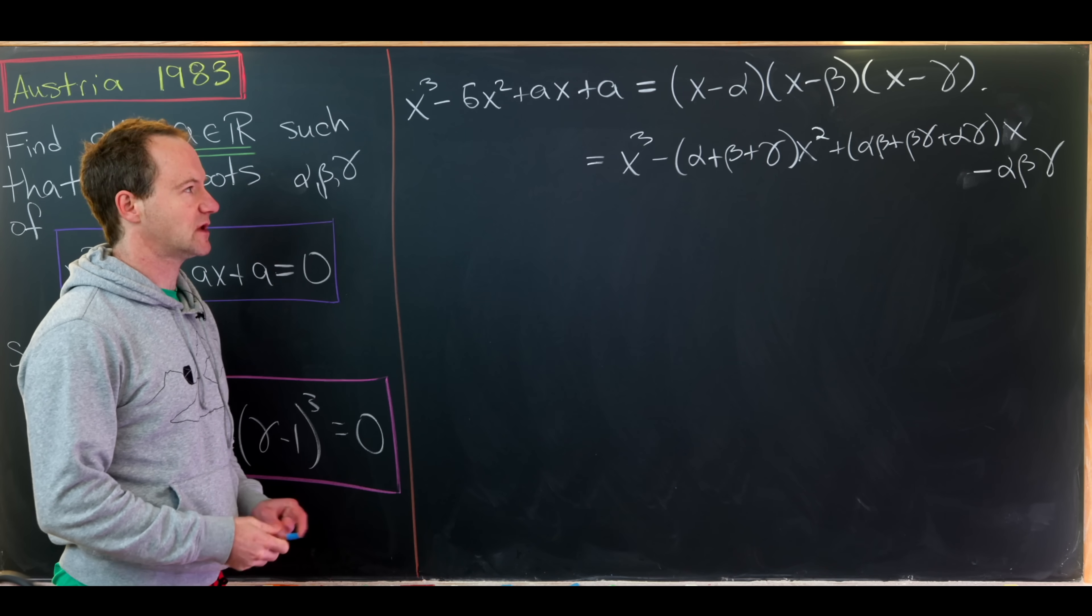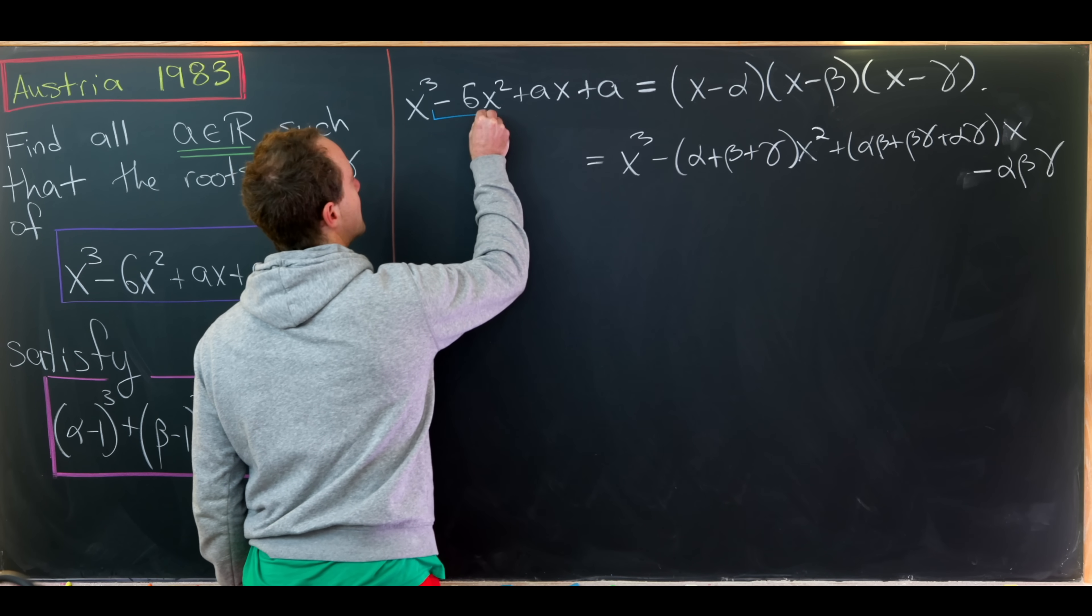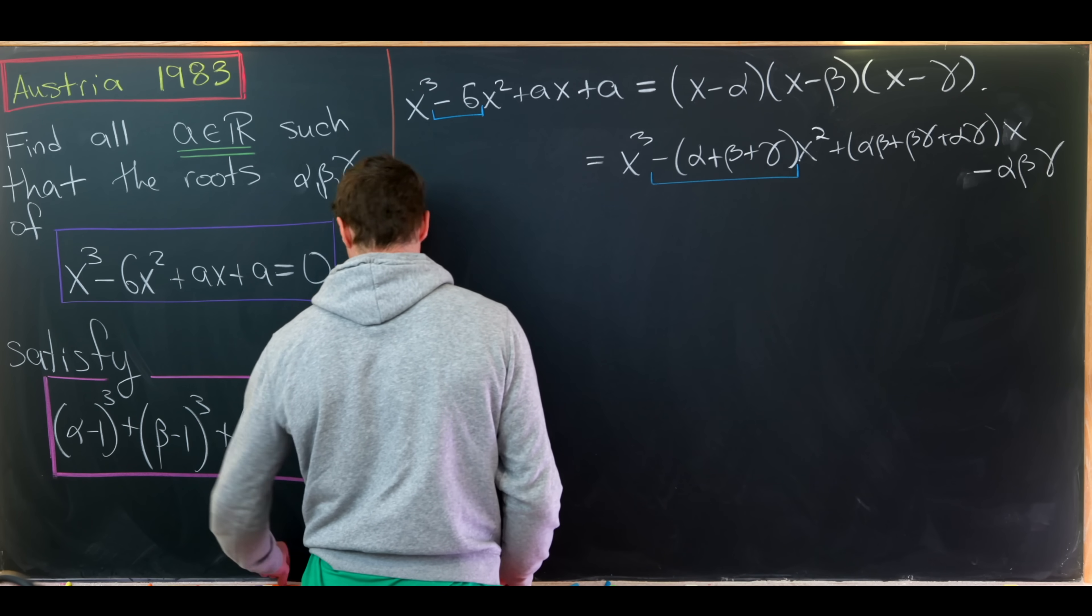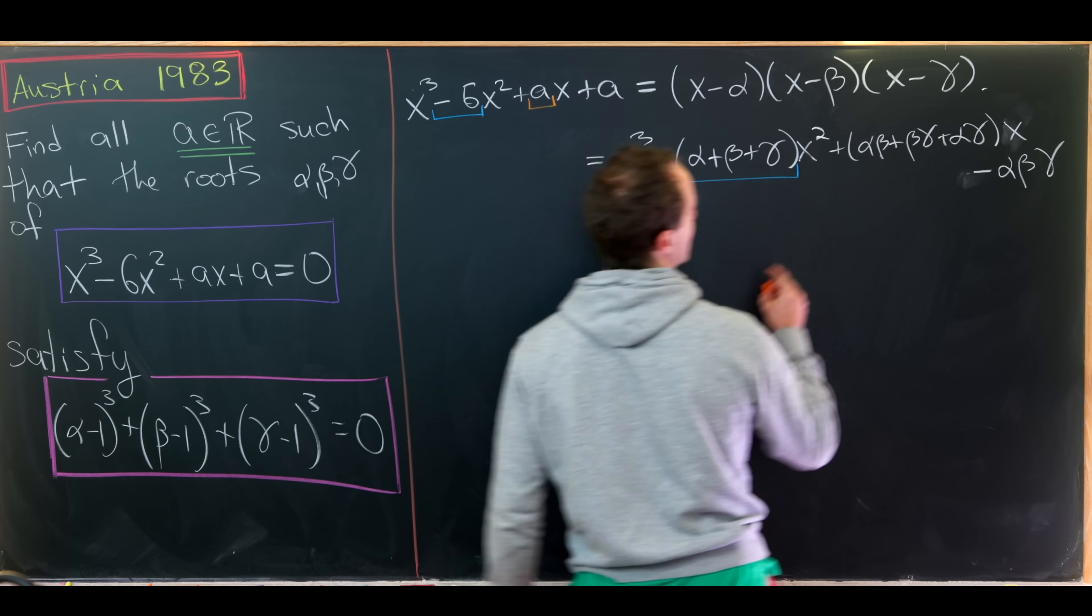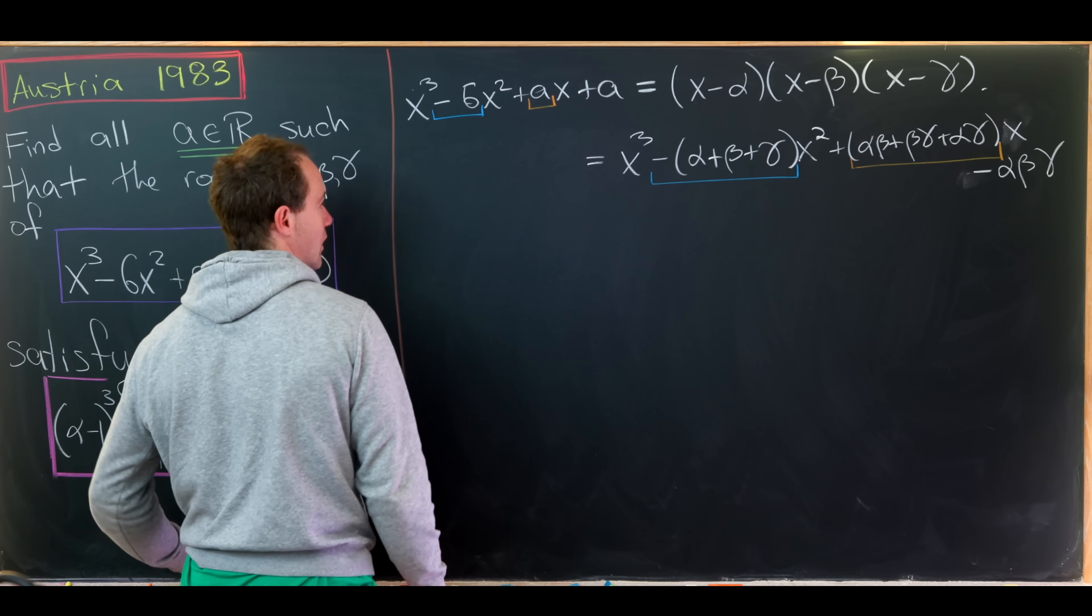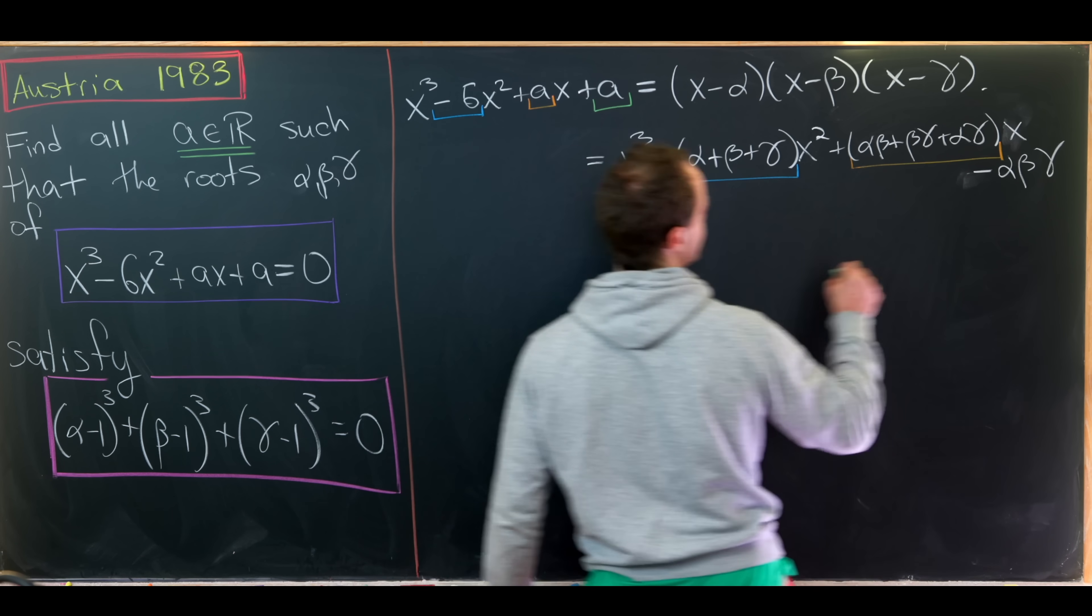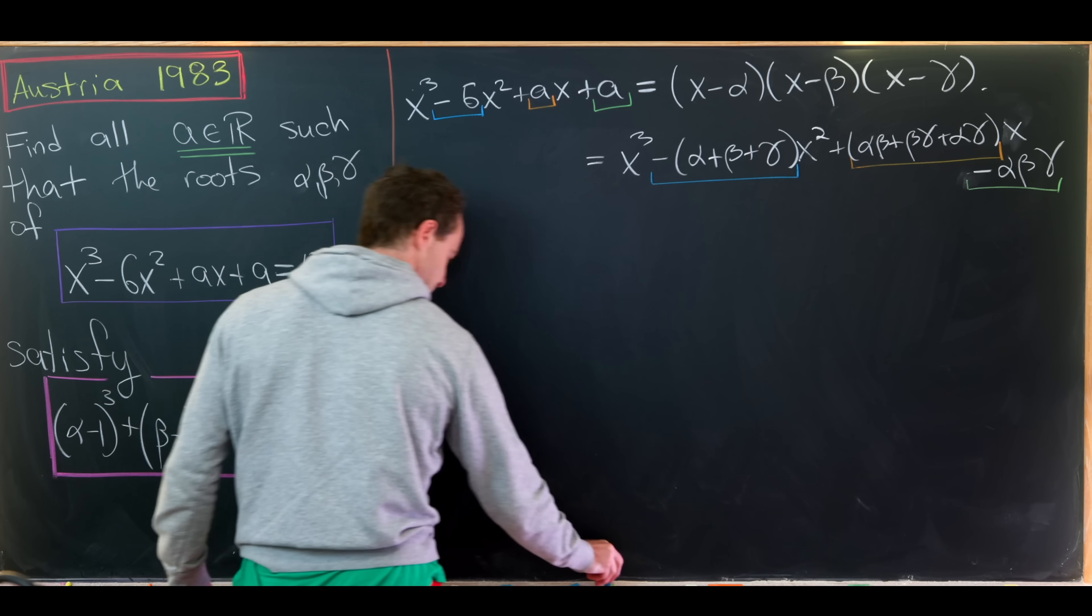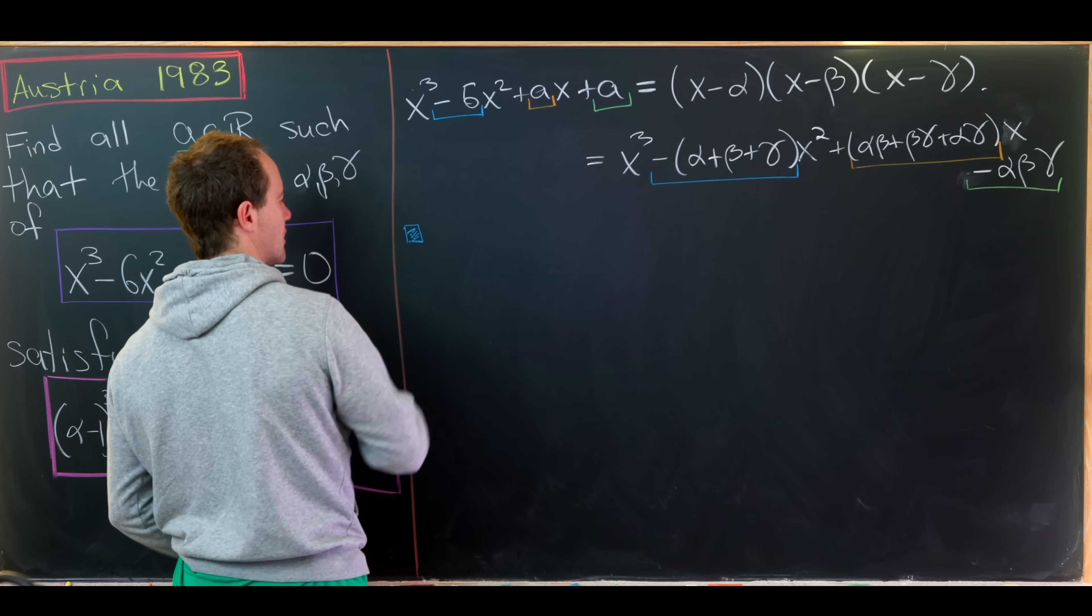So now we can equate coefficients. We'll have minus 6 equals minus the sum of alpha, beta, gamma. And then we'll have a equals this sum of the quadratic terms, a nice symmetric sum of the quadratic terms. And then finally, a will also be equal to the negative product of the roots. So let's write those down in a nice list that we can work off. I'll color code that.